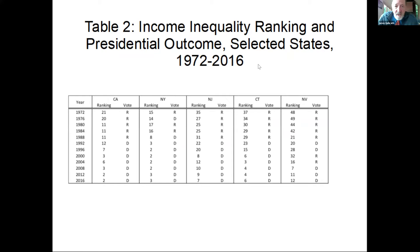Just on the basis of this very simple analysis and data inspection, you can get a pretty good idea of what the underlying dynamics of American presidential politics are these days. The coefficient becomes significant and outside the error bands from the Clinton election of 1992 forward in every election, whether using 1969 or 1990 as the baseline. Looking at specific states: California was the 21st most unequal state in 1972, was Republican through 1988, turned Democratic, and is now the second most unequal state. New York flipped definitively in 1988, now third most unequal. New Jersey moved from 35th to 7th and flipped Democratic in 1992.